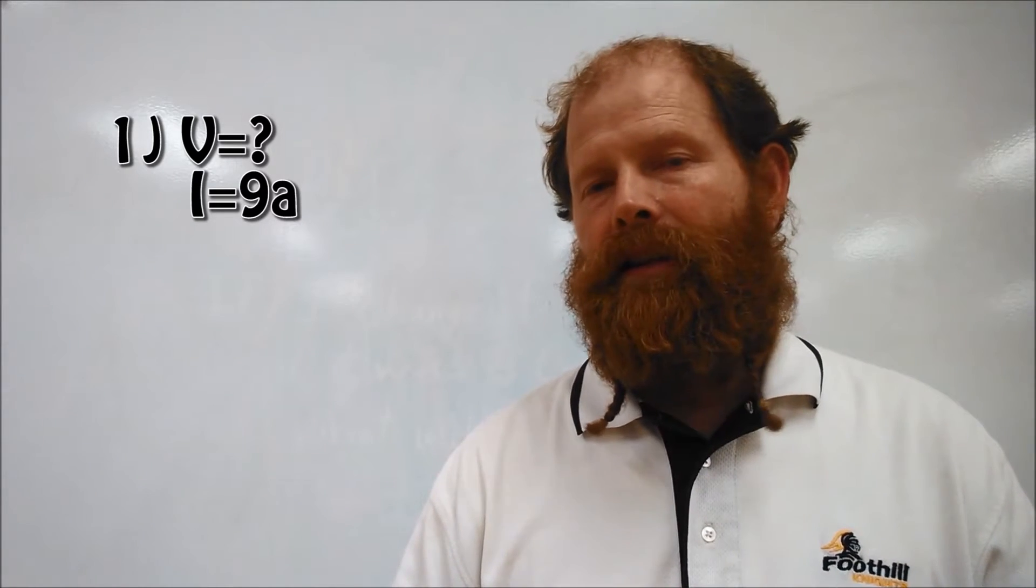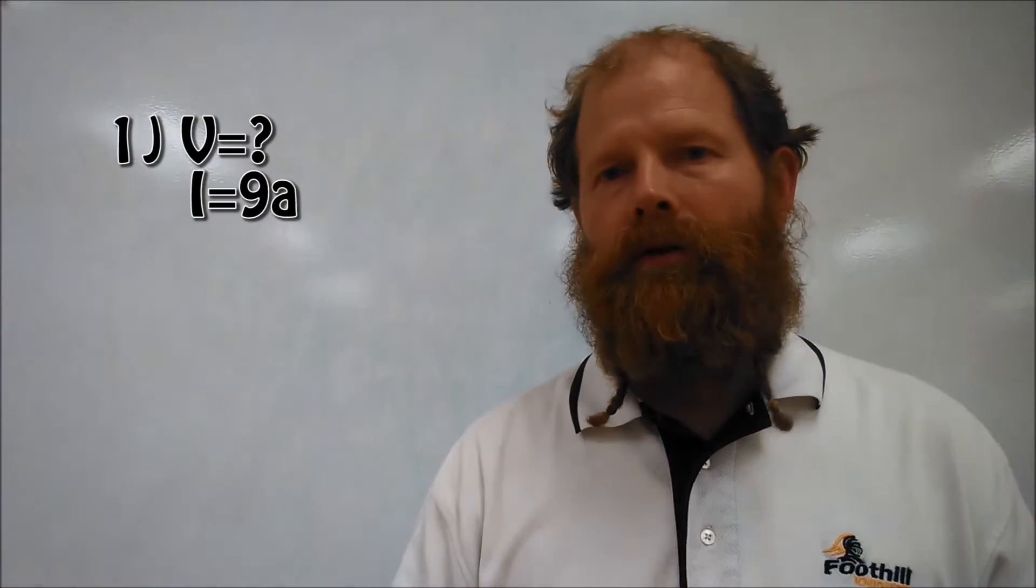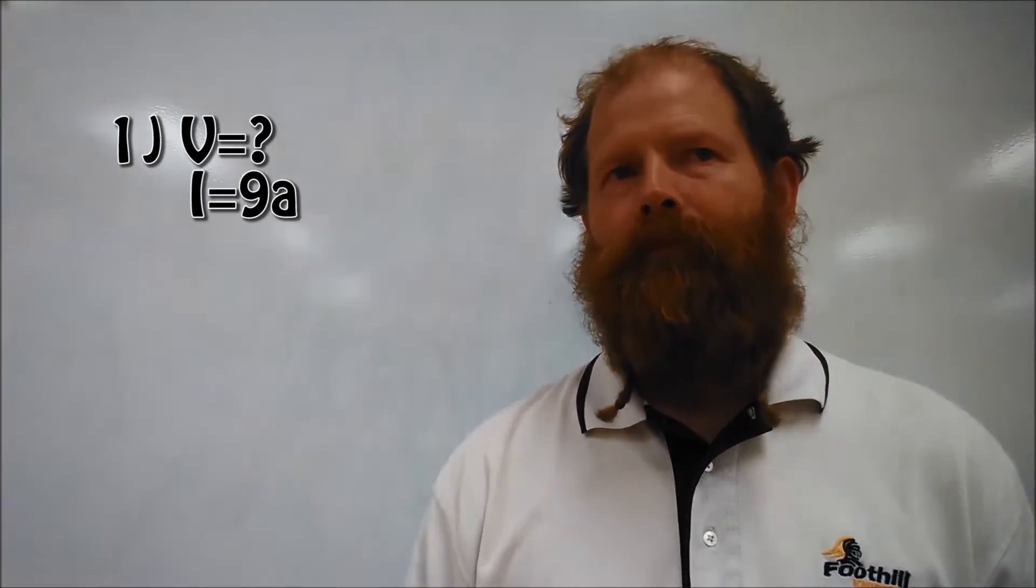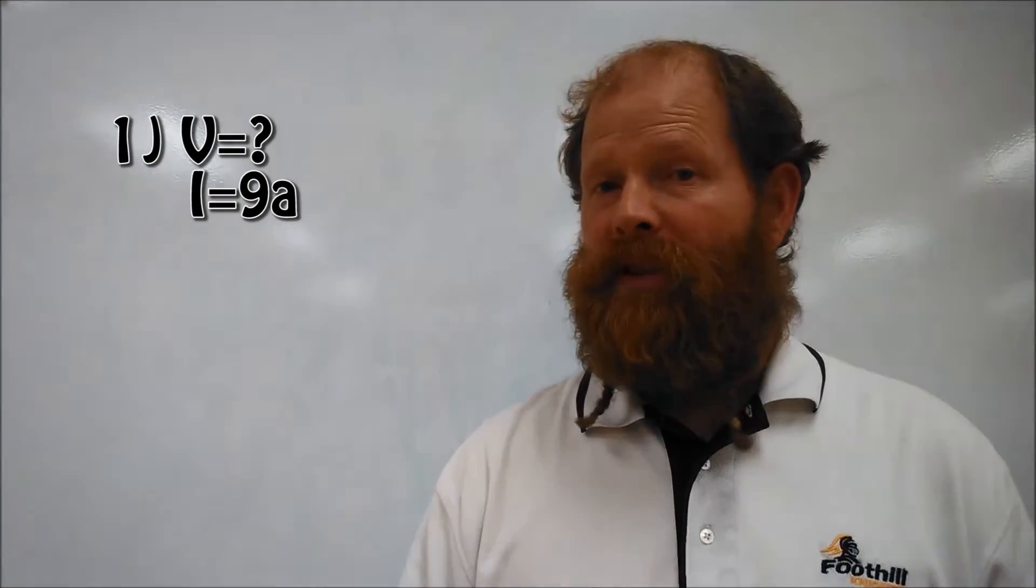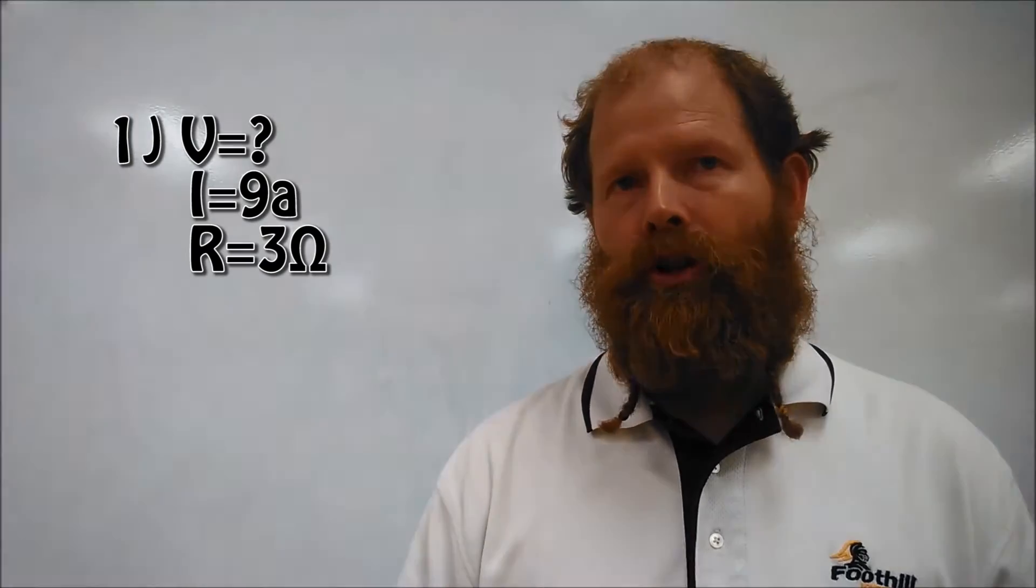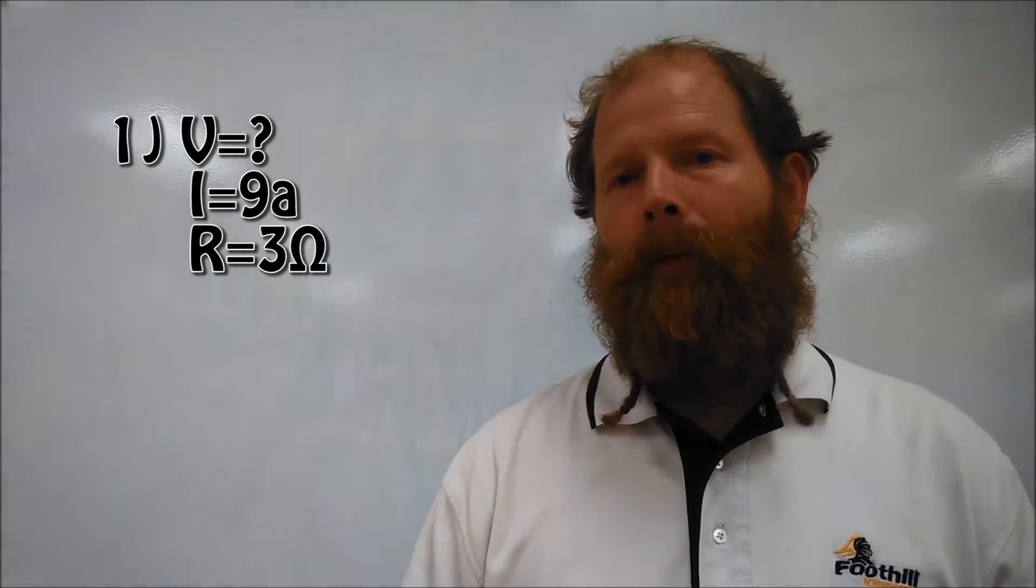And finally, it says resistance of three horseshoes, which is Ohms, but for now we'll just say horseshoes. And we look up resistance, and it's capital R equals three horseshoes. So now we've listed our variables.